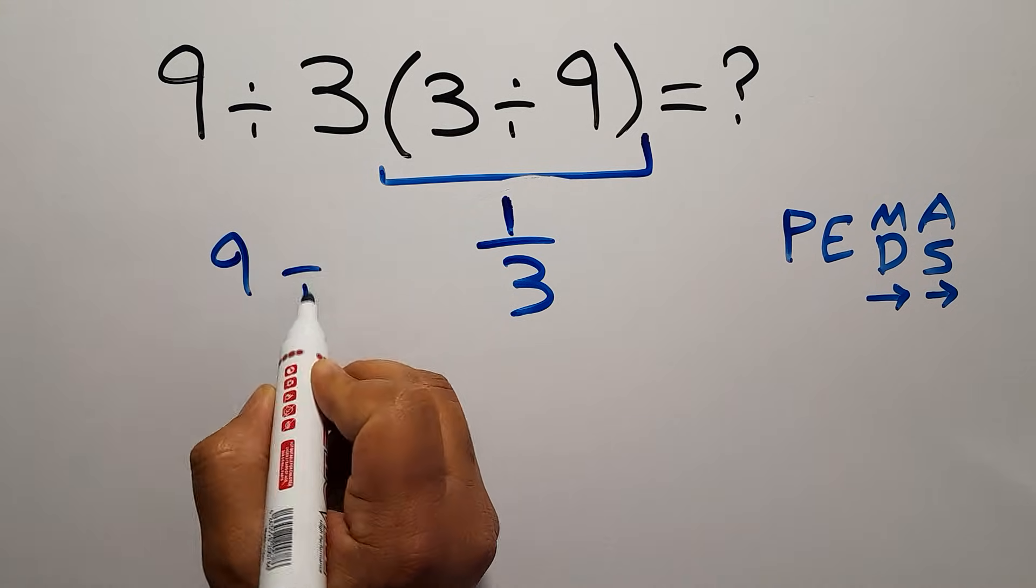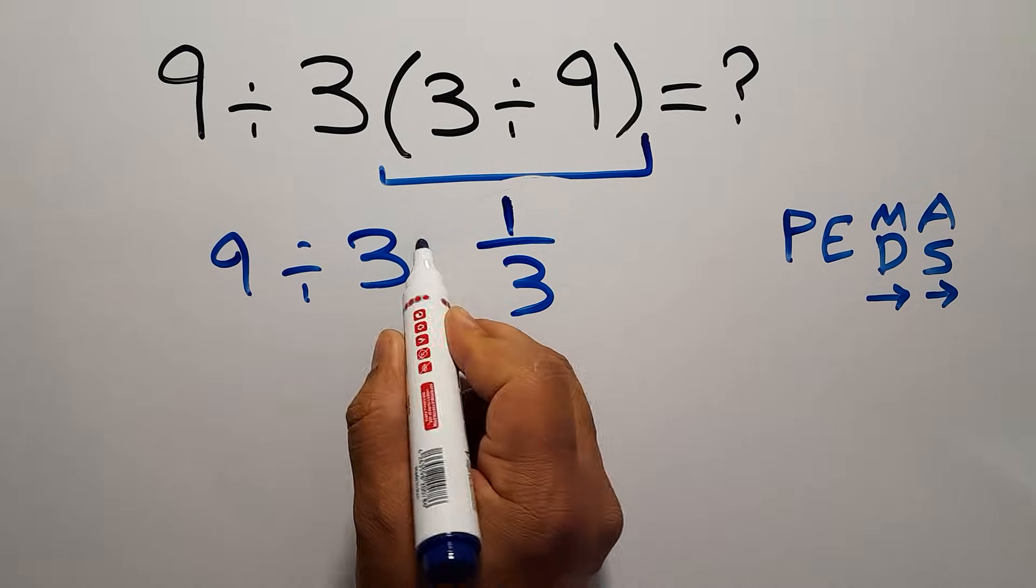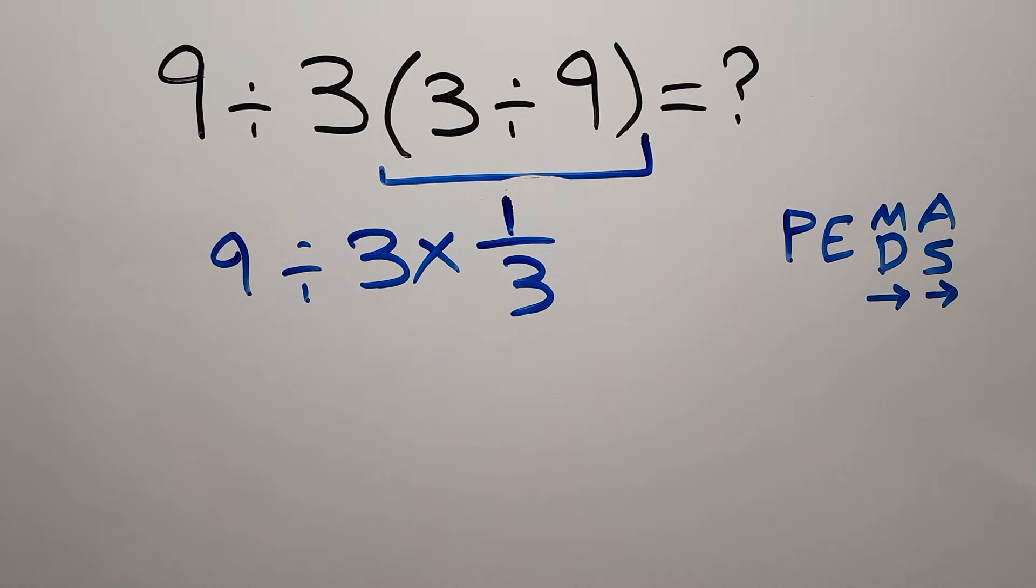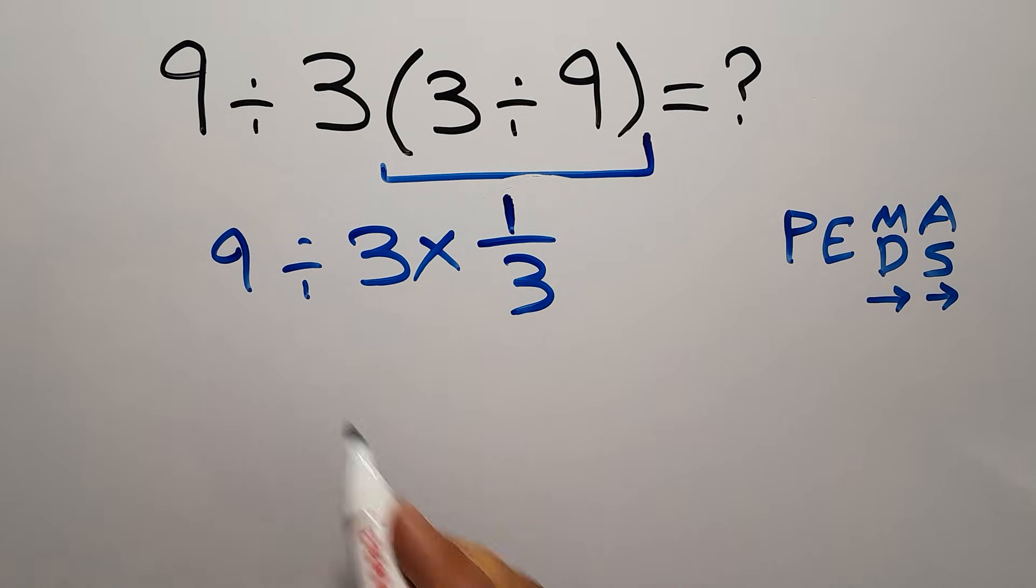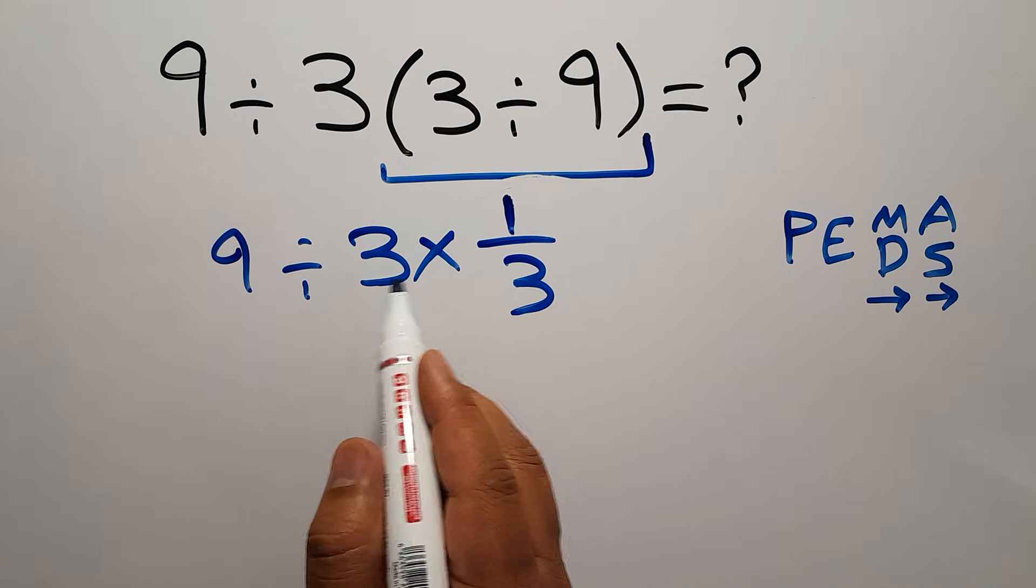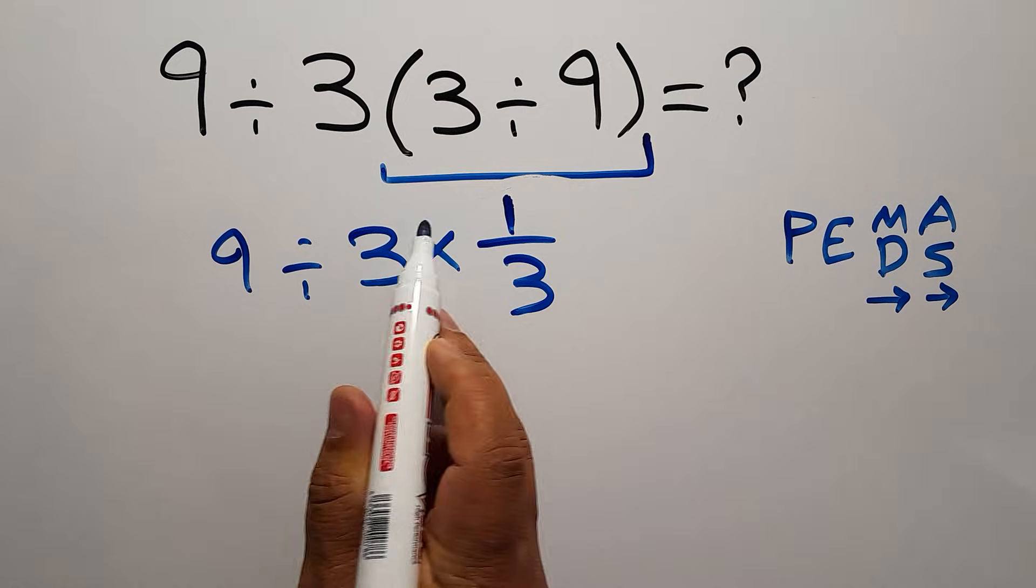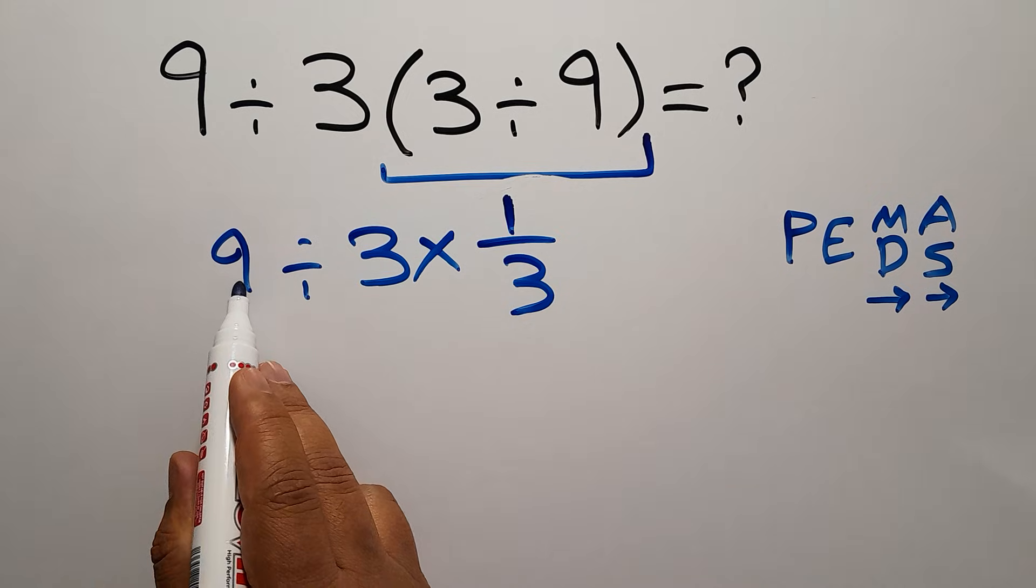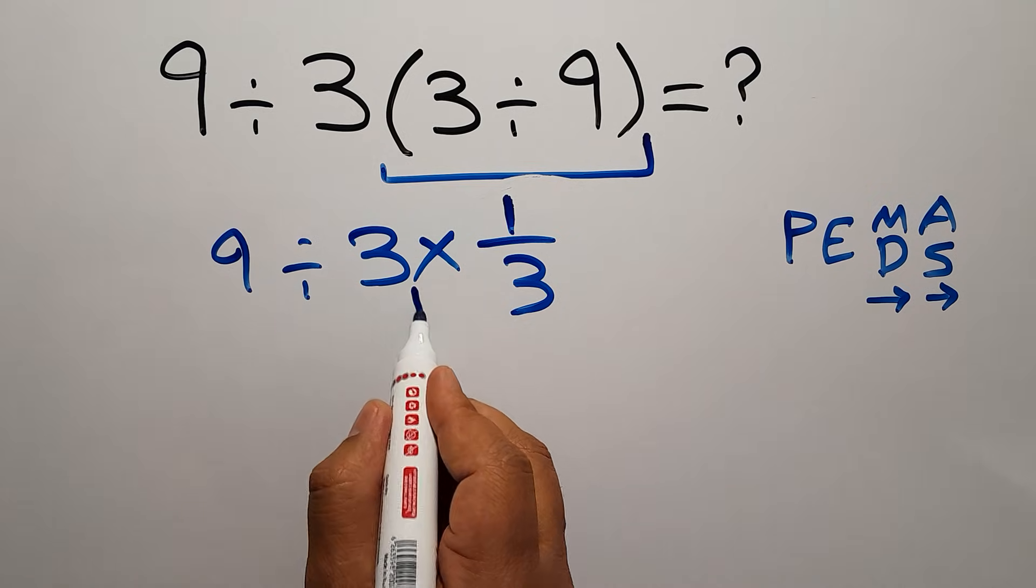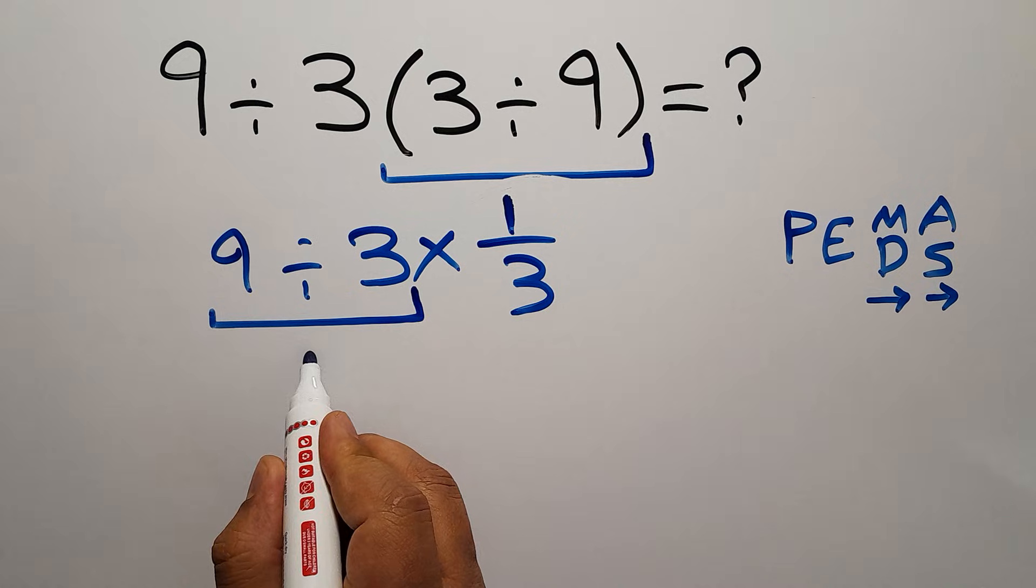So 9 divided by 3, then times 1 over 3. Now, we have to do this division, because multiplication and division have equal priority, and we have to work from left to right. So first 9 divided by 3, which equals 3.